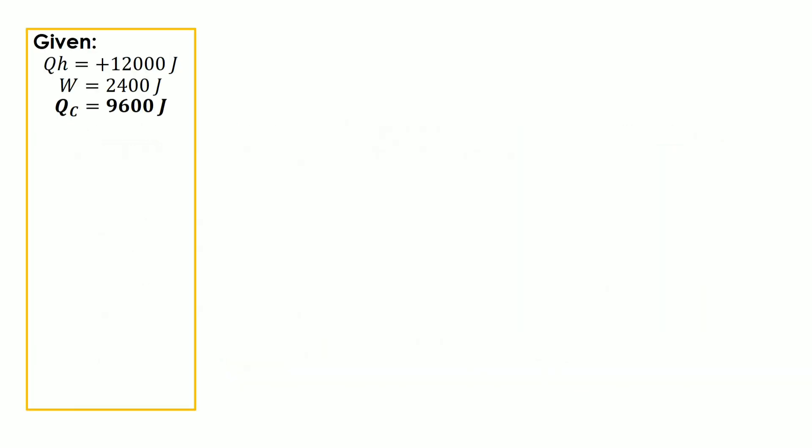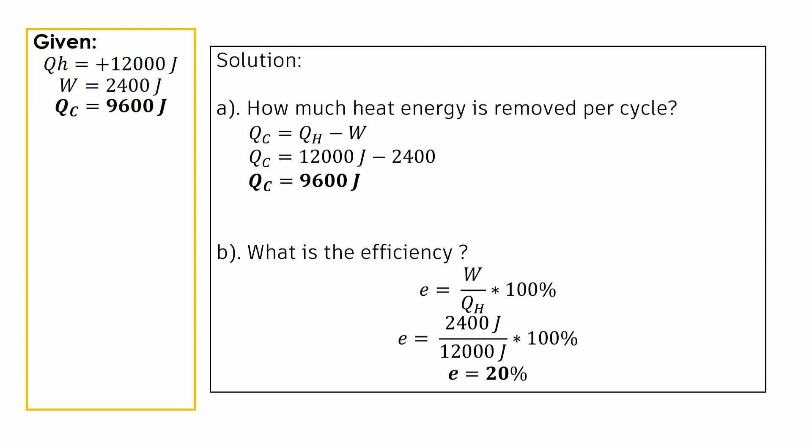Listed on our far left are our given values. For our first question — how much heat energy is removed per cycle — we use the formula: heat removed is equivalent to heat added minus work. We know the heat addition is 12,000 joules and the mechanical work output is 2,400 joules. The difference is 9,600 joules, which is the heat energy removed in the cycle.